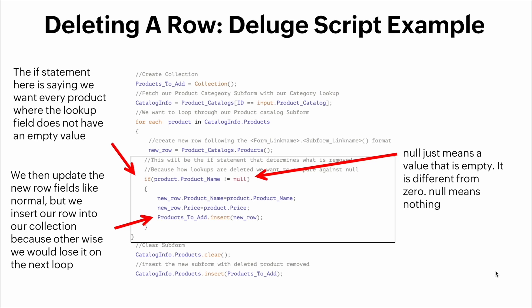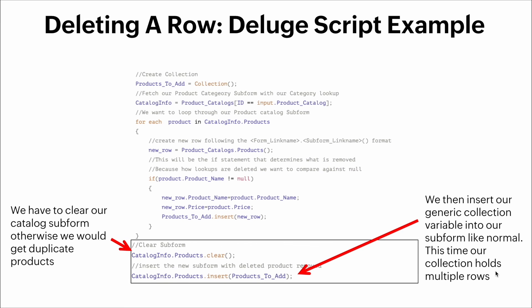The `if` statement says we want every product where the lookup field does not have an empty value. We then update the new row fields like normal, but we insert the row into our collection — otherwise we would lose it on the next loop. `null` means a value that is empty; it is different from zero. We then clear the catalog subform to avoid duplicate records, and insert our generic collection variable containing the multiple rows back into the subform.